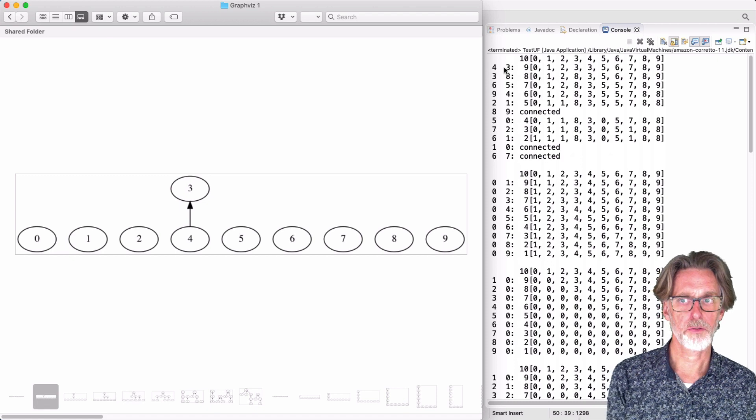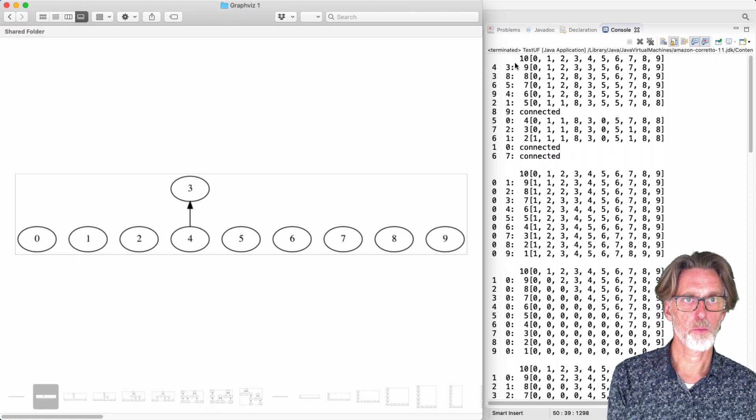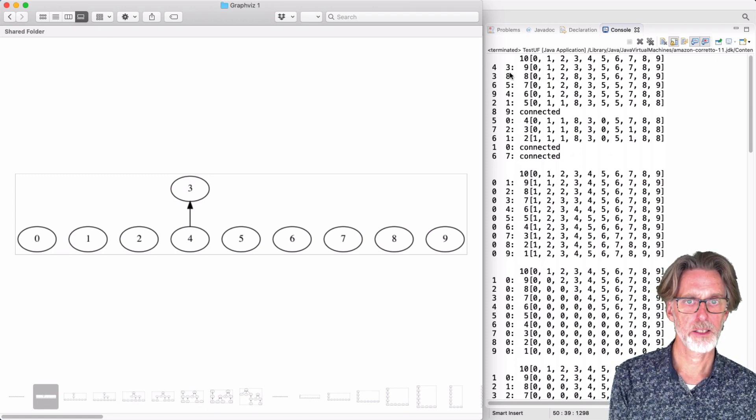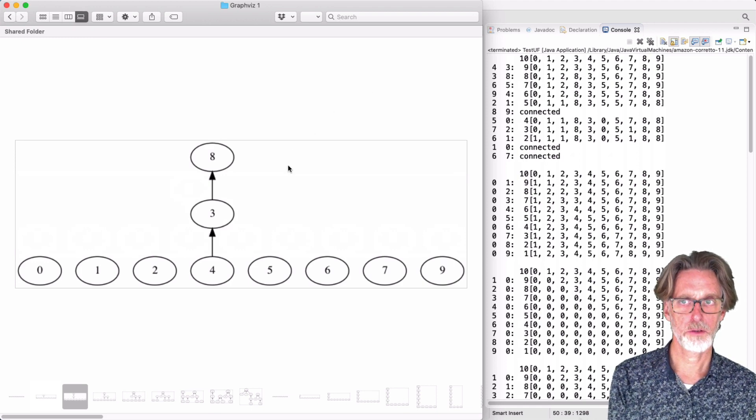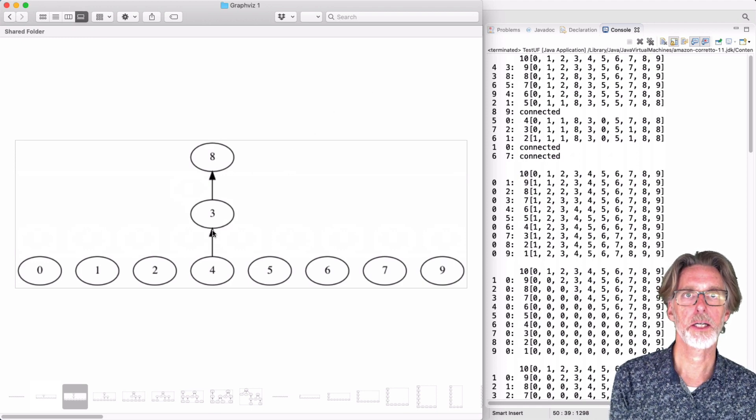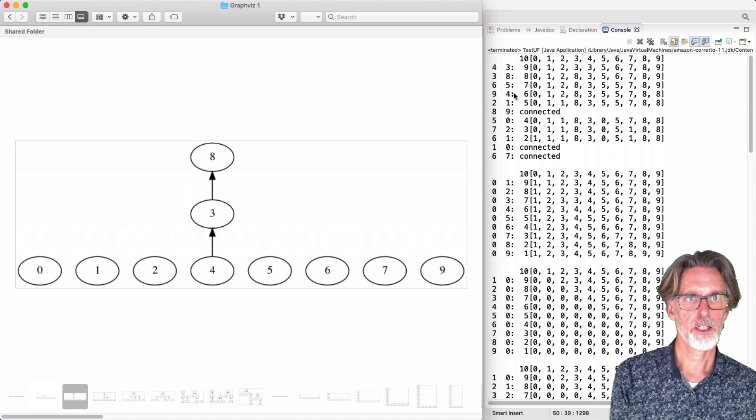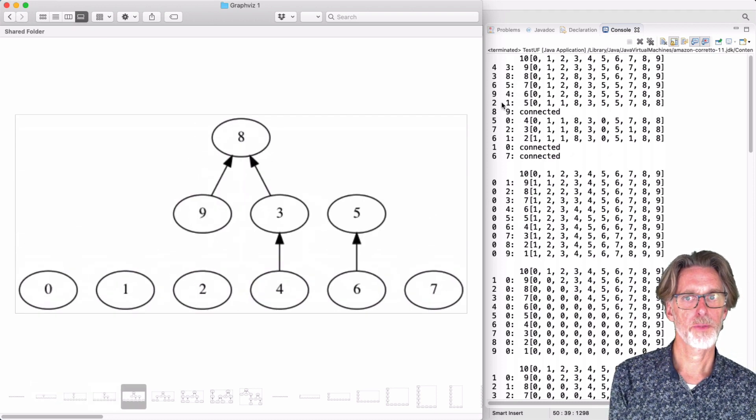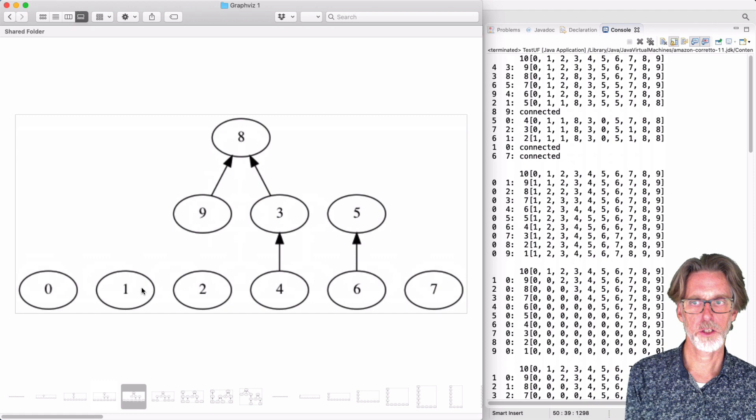So we have initially the array where every element is its own champion. And now we're going to join 3 and 4. Again, 3 the winner. Now 8 the winner. And note the difference between quick union and quick find. 6 and 5, 9 and 4.